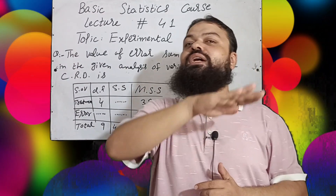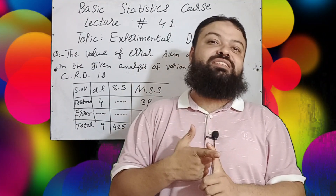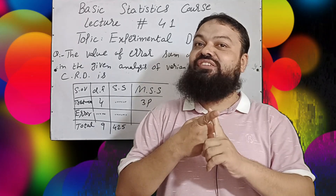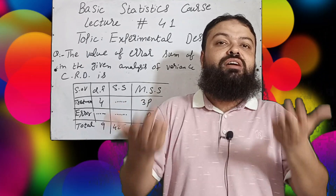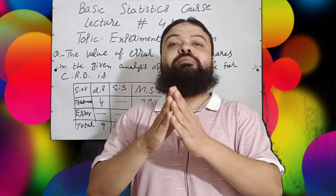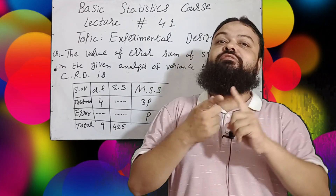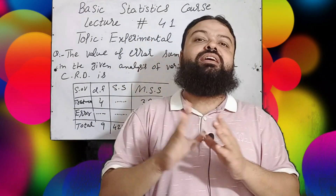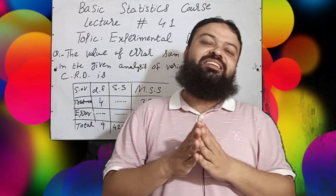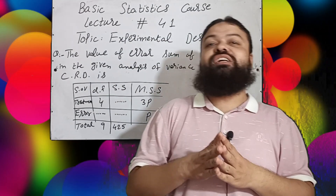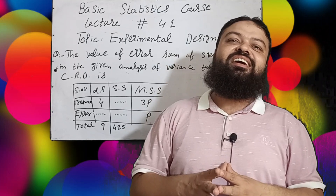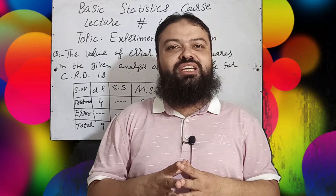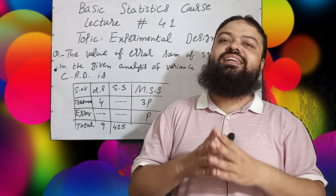We will also discuss which basic principle of experiment design is used for increasing efficiency, reducing experimental error, and making homogeneous blocks. I will tell you in which experimental design local control is used, why we make homogeneous blocks, and which basic principle is compulsory for any type of experimental design. Before starting, I request everyone to subscribe to my channel, like and share, and click the bell icon for notifications.